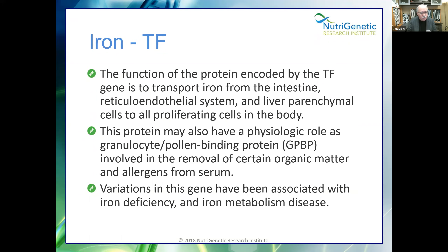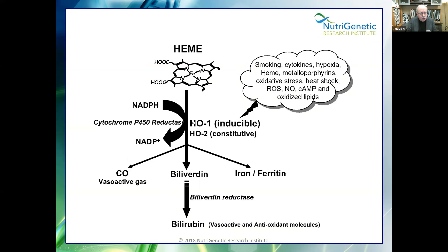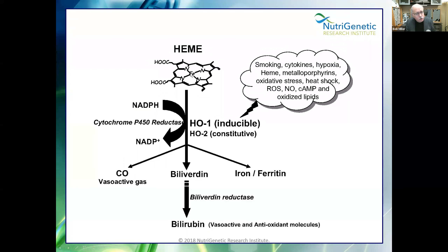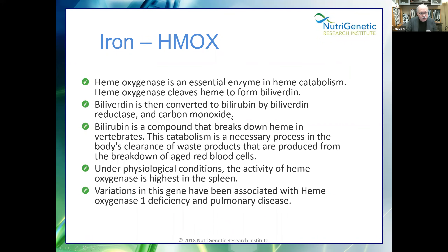Variations in the transferrin receptor gene have been associated with iron deficiency and iron metabolism disease. We're big fans of the heme oxygenase genes — HMOX1 and HMOX2 — because here's where old heme uses NADPH and cytochrome P450 to put iron into ferritin, make biliverdin, which then converts to bilirubin, a very powerful antioxidant molecule. Heme oxygenase is an essential enzyme in heme catabolism. With mutations in HMOX1 or HMOX2, the iron may be dumped and become hydroxyl radicals.